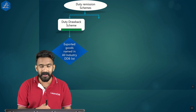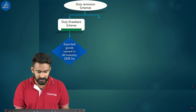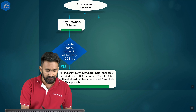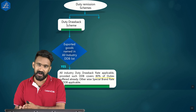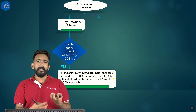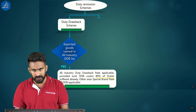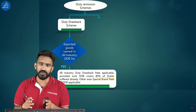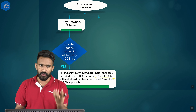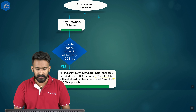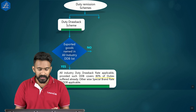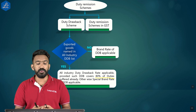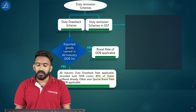Under duty drawback: if the exported goods are named in the All Industry Duty Drawback List, the all-industry rate applies provided that rate covers at least 80% of duties already suffered; otherwise you must go for a Special Brand Rate. If goods are not mentioned in the all-industry list, the Brand Rate of duty drawback applies. For GST duty remission, two options are available: supply under Bond or Letter of Undertaking (LUT), or export on payment of IGST with refund claim.